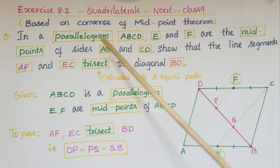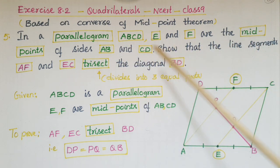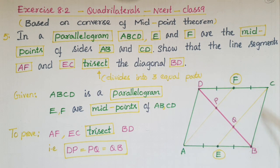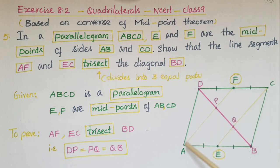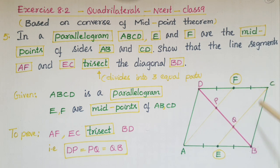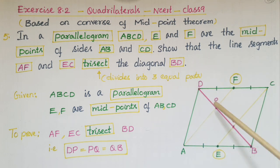In this problem, in a parallelogram ABCD, E and F are the midpoints of sides AB and CD. We have to show that the line segments AF and EC trisect the diagonal BD. Given that ABCD is a parallelogram, opposite sides are parallel and equal, and E is the midpoint of AB and F is the midpoint of DC.